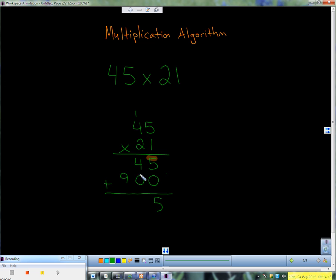5 plus 0 is 5, 4 plus 0 is 4, and nothing plus 9 is 9. So my answer would be 945.